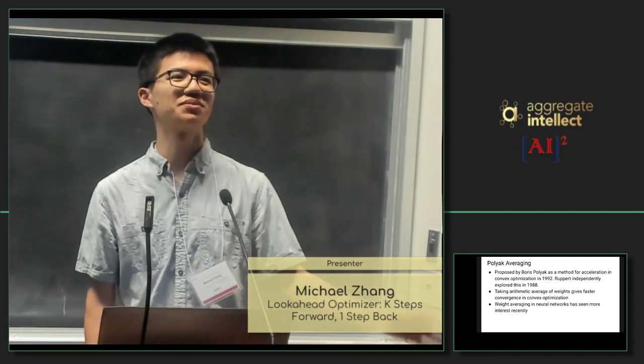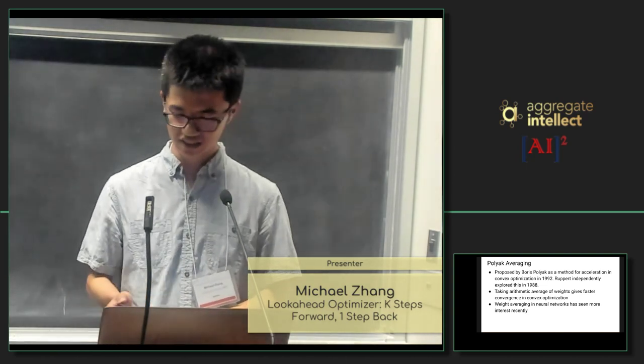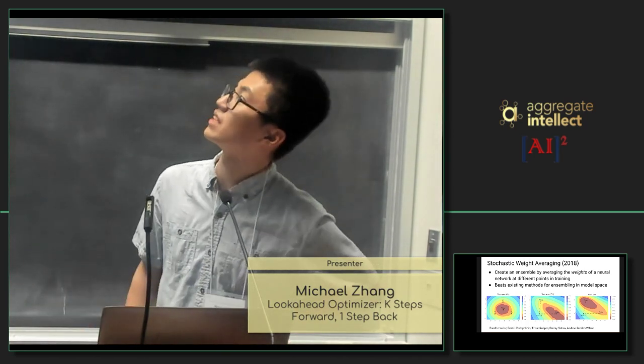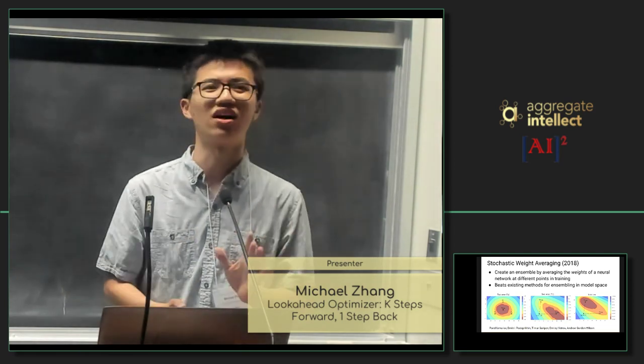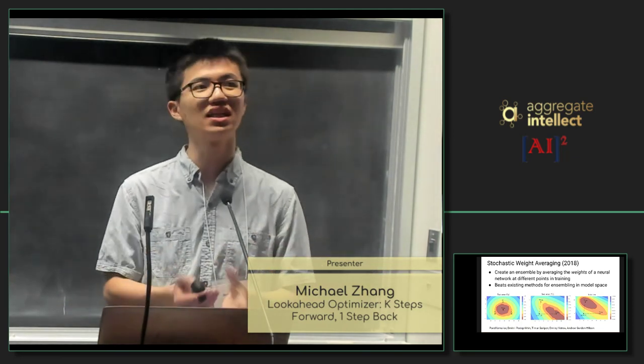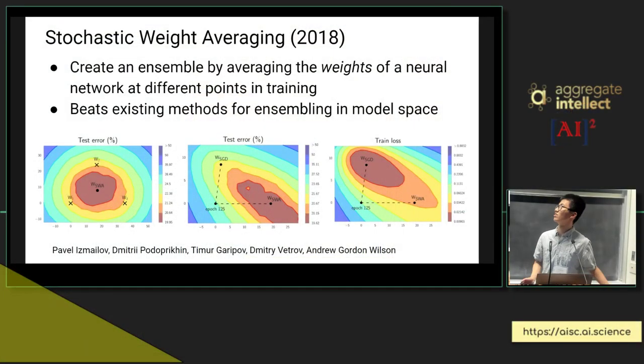While weight averaging has been studied in convex optimization, people haven't really looked at it more carefully in neural networks until more recently. One example of this is stochastic weight averaging, which comes from a group from CMU in 2018. The idea of this is you train a neural network, but you can sort of create an ensemble effect by averaging the weights you obtain at different points in training. You average those weights in weight space, and then using that model, you can get lower test error and just do better generally.